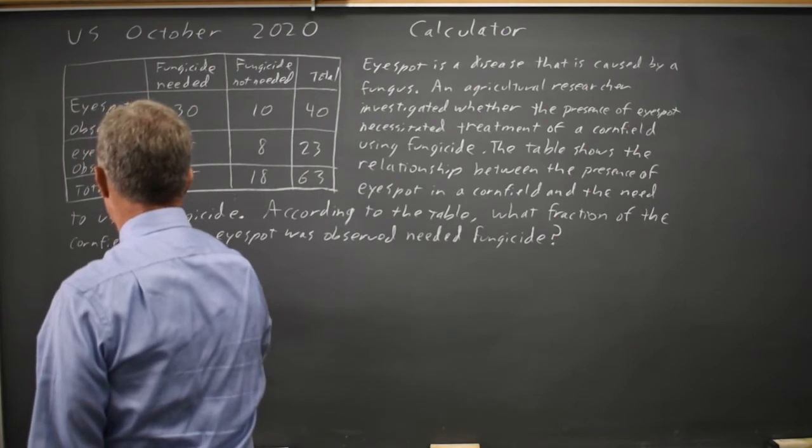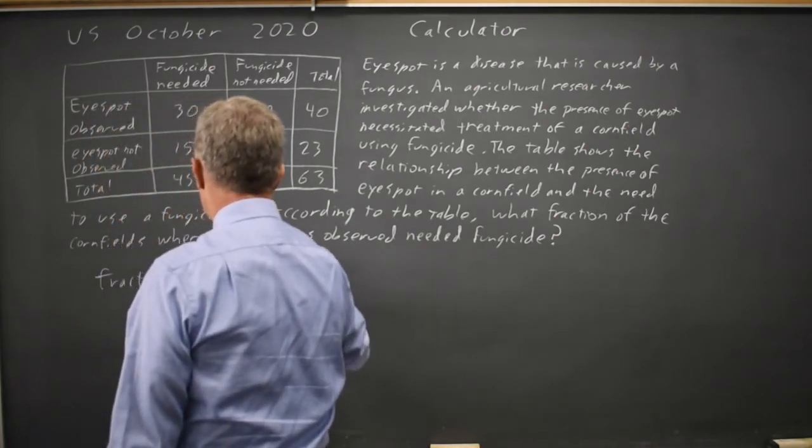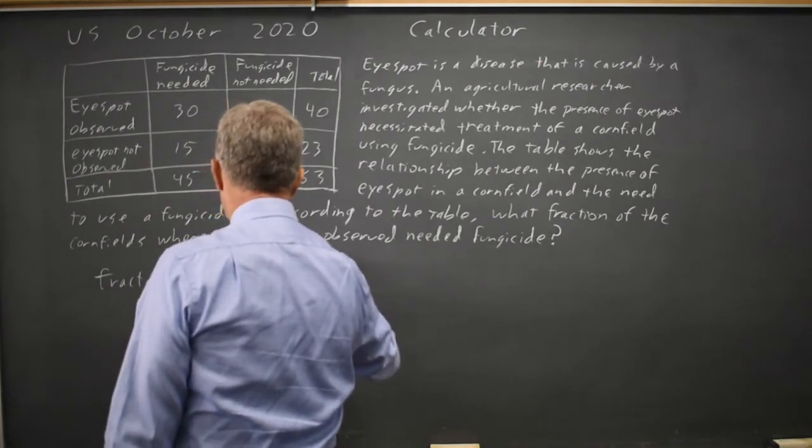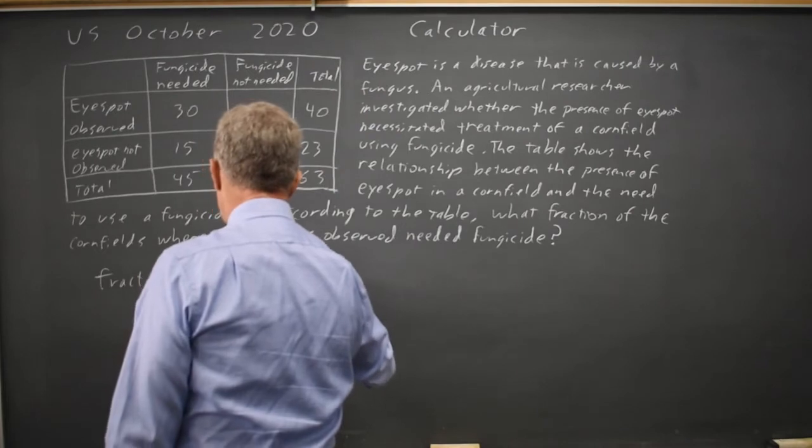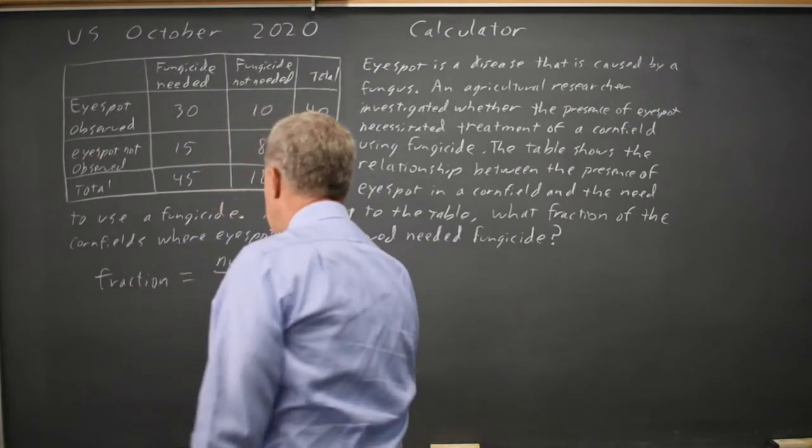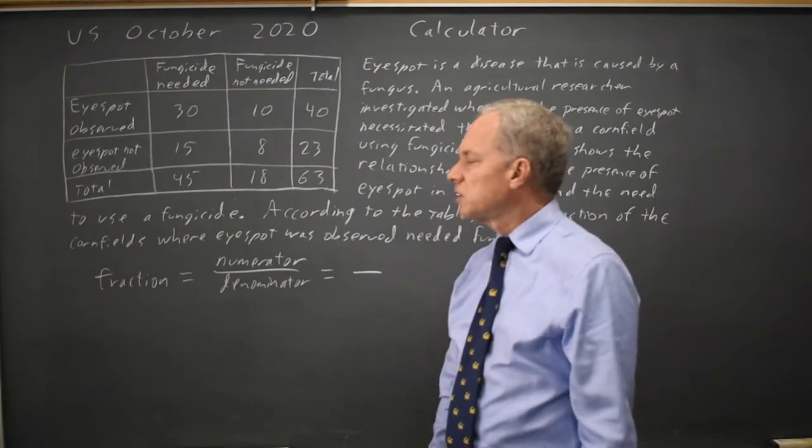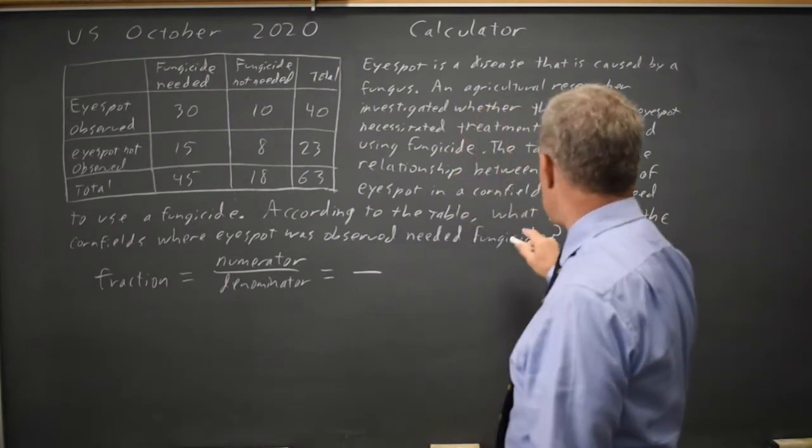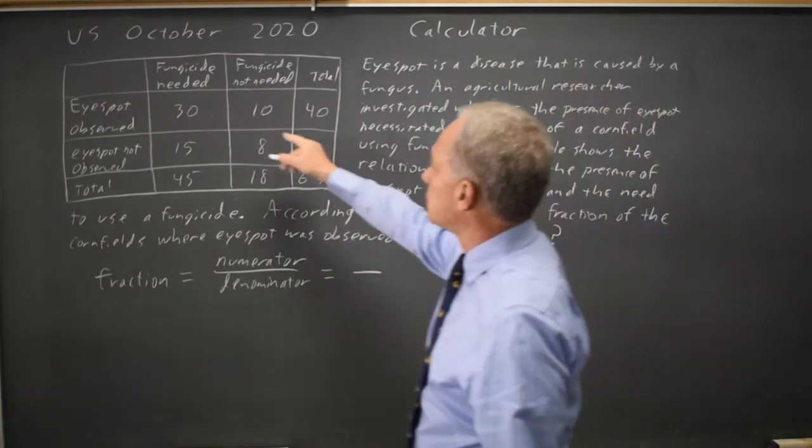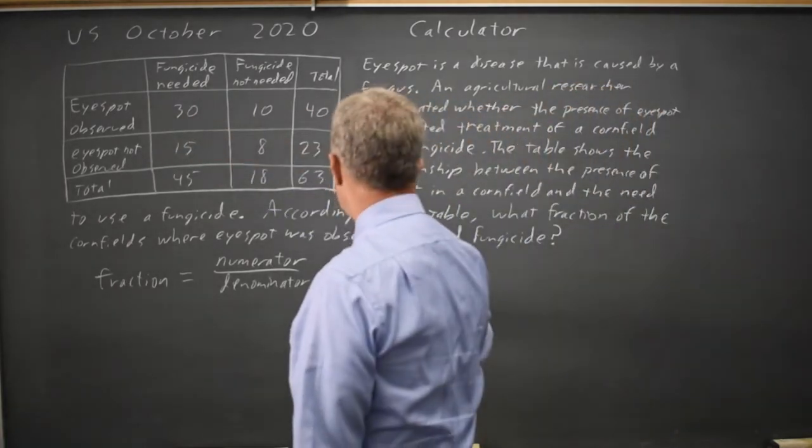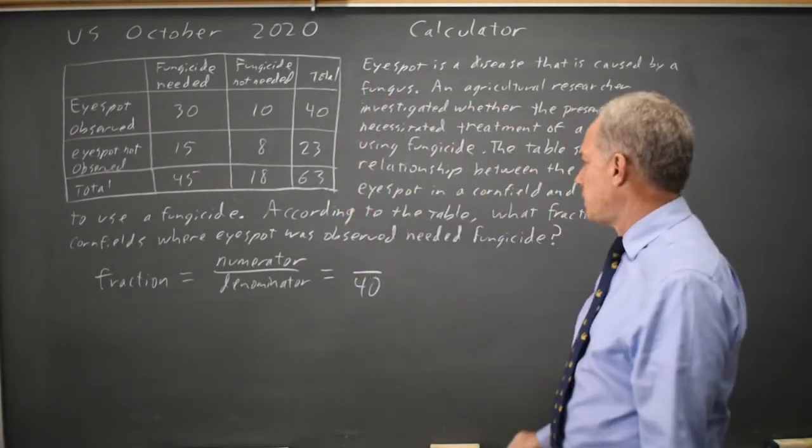I always like to write it as a numerator over a denominator, where the denominator is all individuals they're asking about that we might have chosen. So what fraction of cornfields where I-spot was observed? I-spot was observed in a total of 40 cornfields, so that's our denominator.